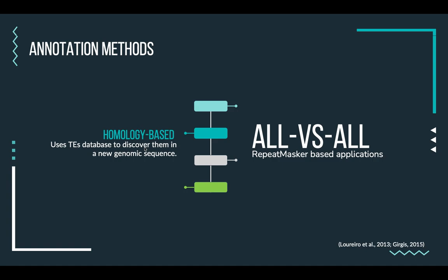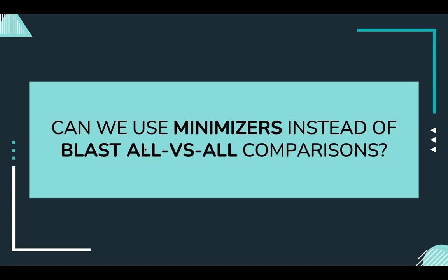The problem with these tools is that they require huge computational capacities and time to annotate complex genomes. So we asked ourselves if we could use minimizers — a developing strategy for different genomic approaches — instead of BLAST all-versus-all comparisons.